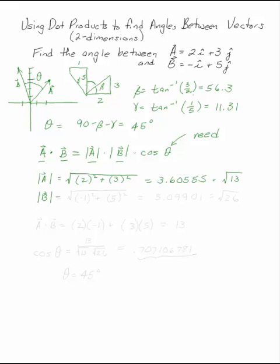The magnitude of B is the square root of minus 1 squared plus 5 squared, which is 5.0991, or the square root of 26.